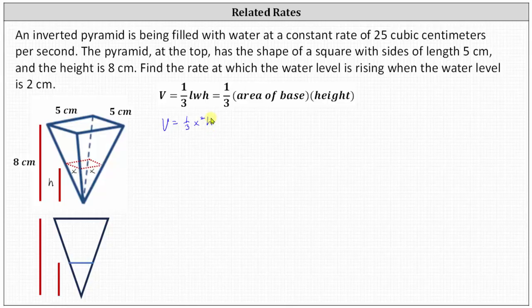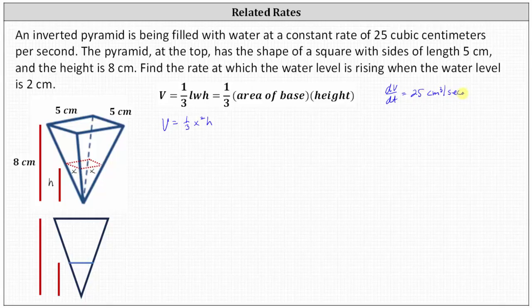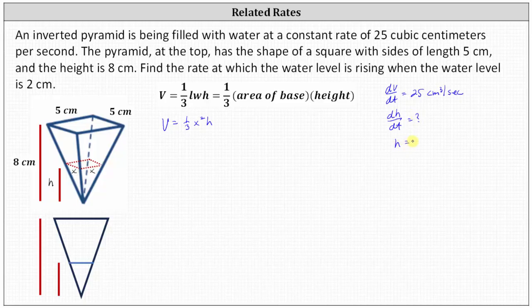Let's also list all the given information. The pyramid is being filled with water at a constant rate of 25 cubic centimeters per second, which means dV/dt, the change in the volume with respect to time, equals positive 25 cubic centimeters per second. We're looking for dh/dt, the rate at which the water level is rising, when h is equal to two centimeters.